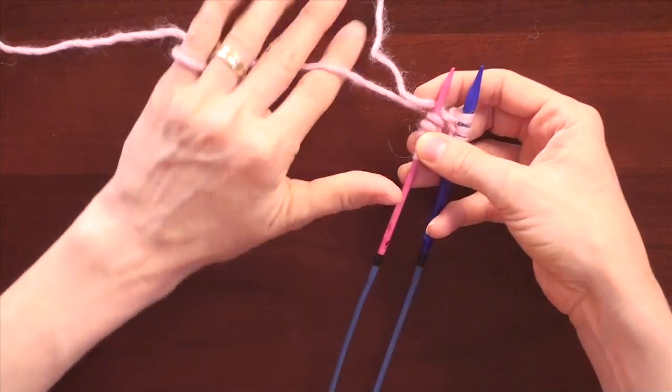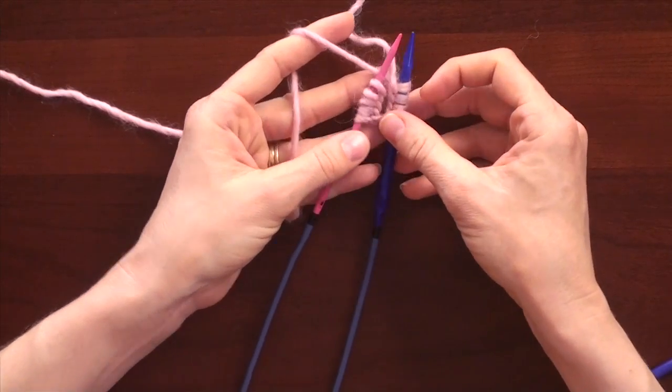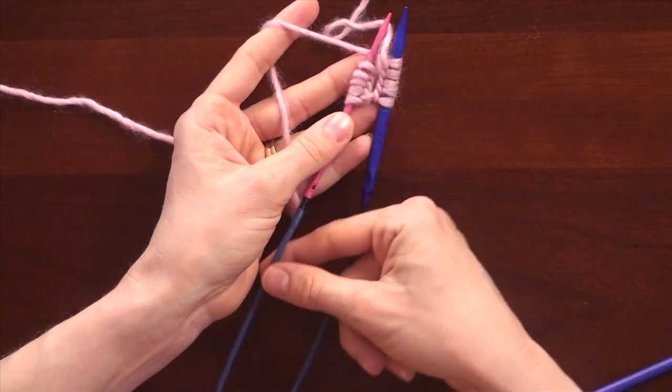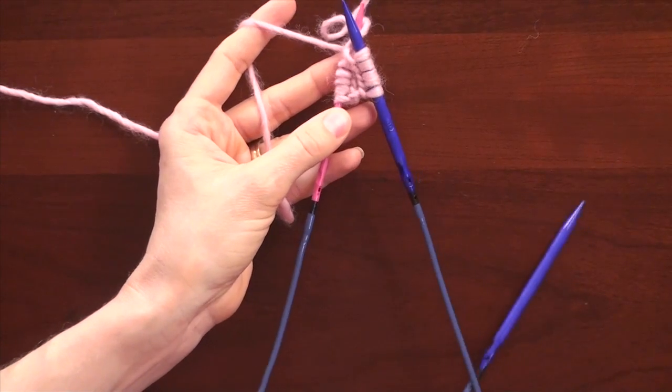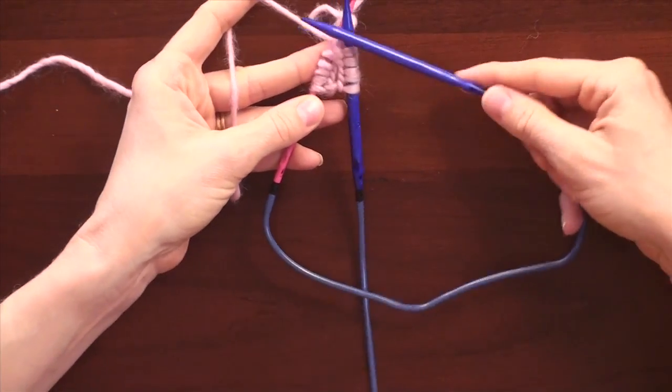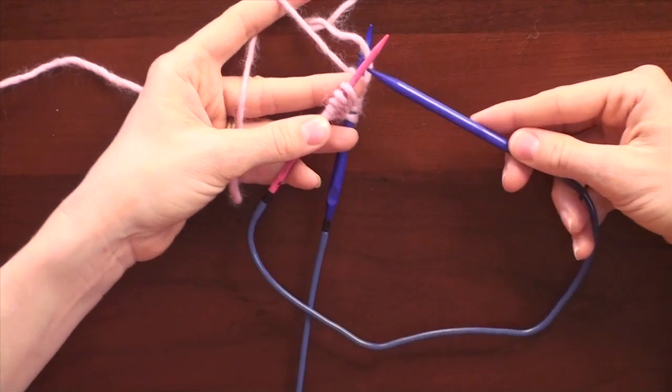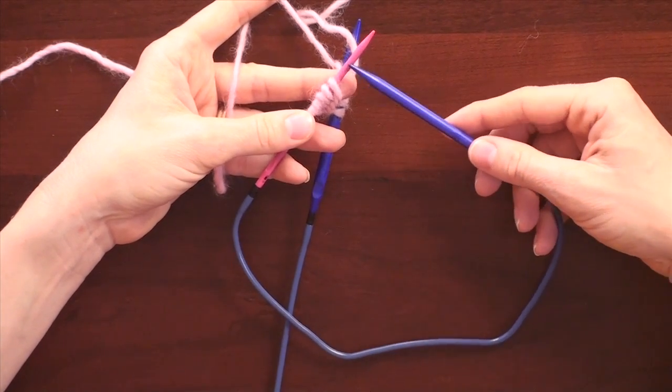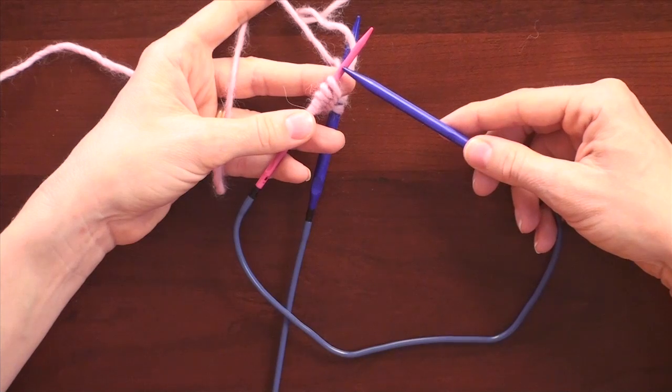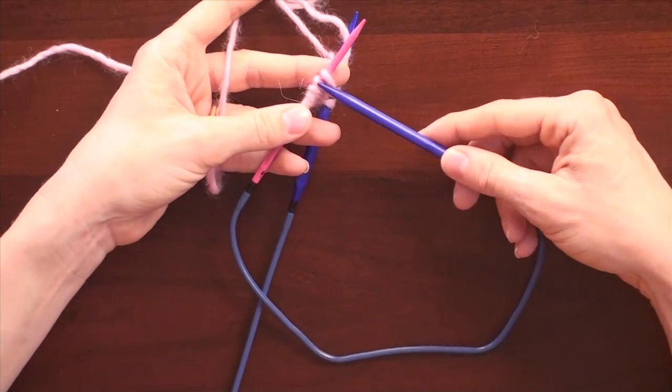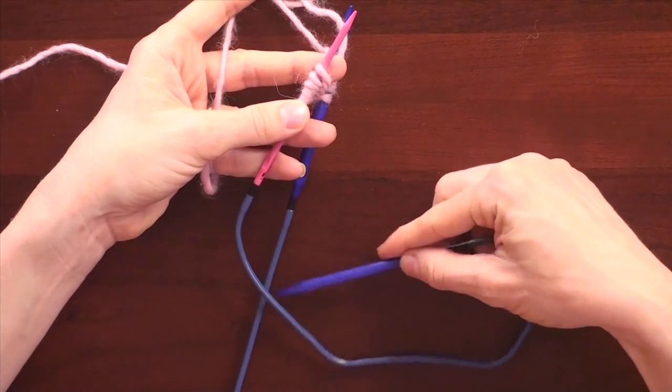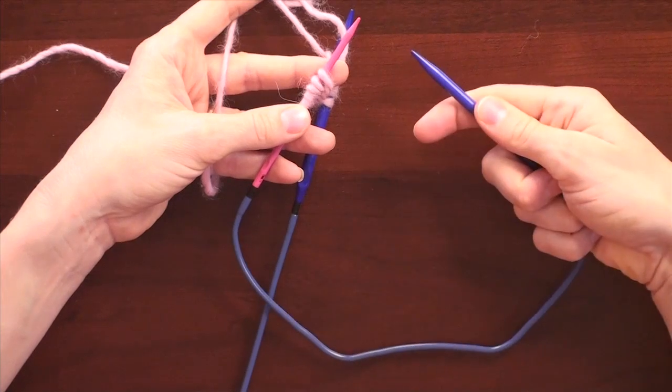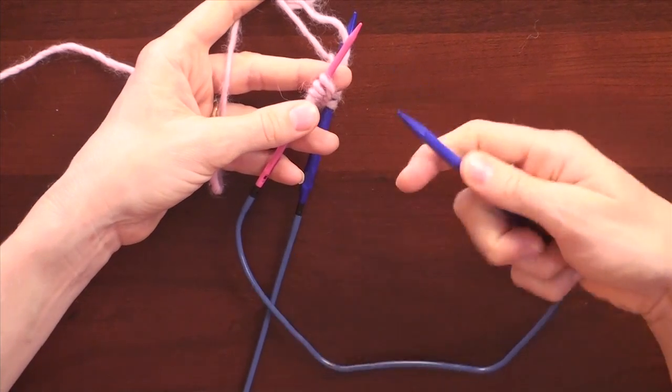So let's see, get my working yarn here. So now the trick here with the two circular method is to make sure that I'm just going to be working with one circular needle at a time. So I'm about to knit off of these stitches. So I follow that cable and make sure I grab the same cable needle, circular needle.